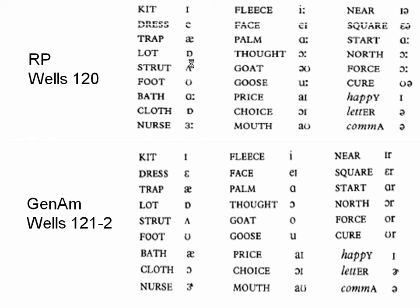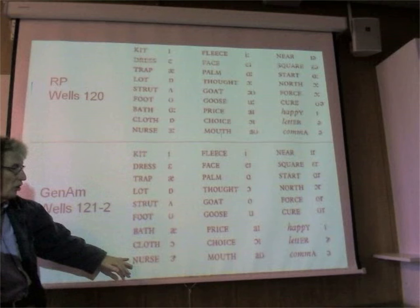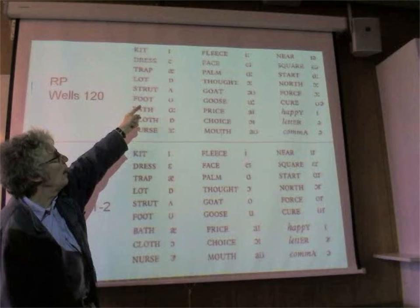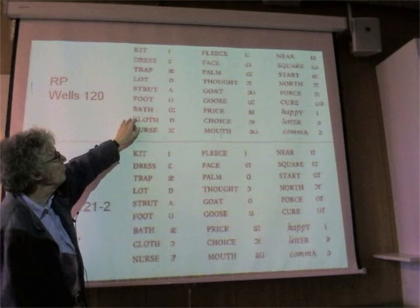On pages 120-122, he gives the sets in RP English with the pronunciations, the same sets in General American, and he'll give the same sets in Scottish, but there'll be different vowels. So these are the vowels we remember from RP: I, E, A, O, A, U, A, O, and UR.